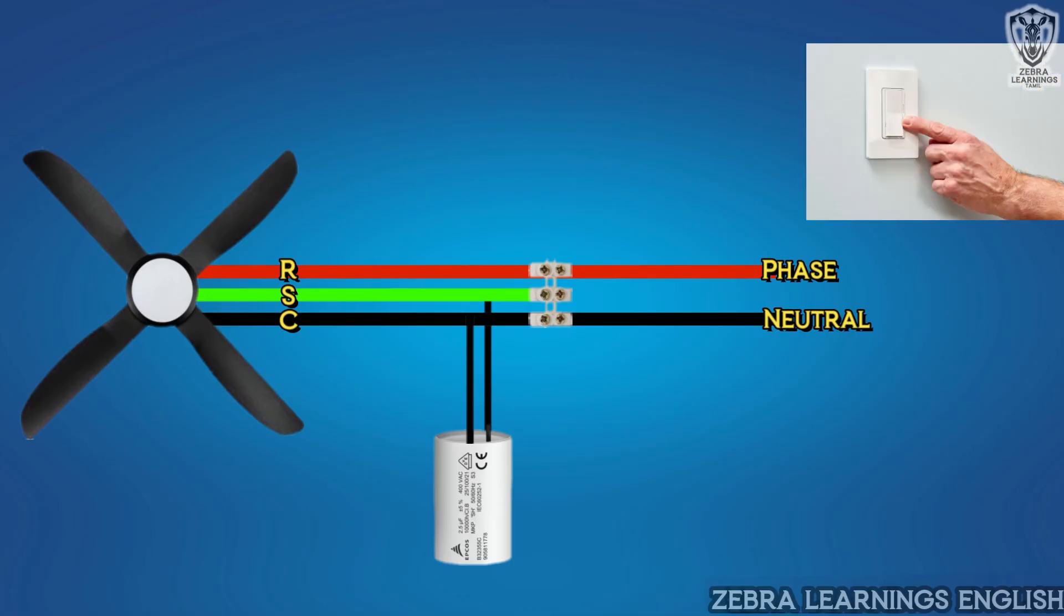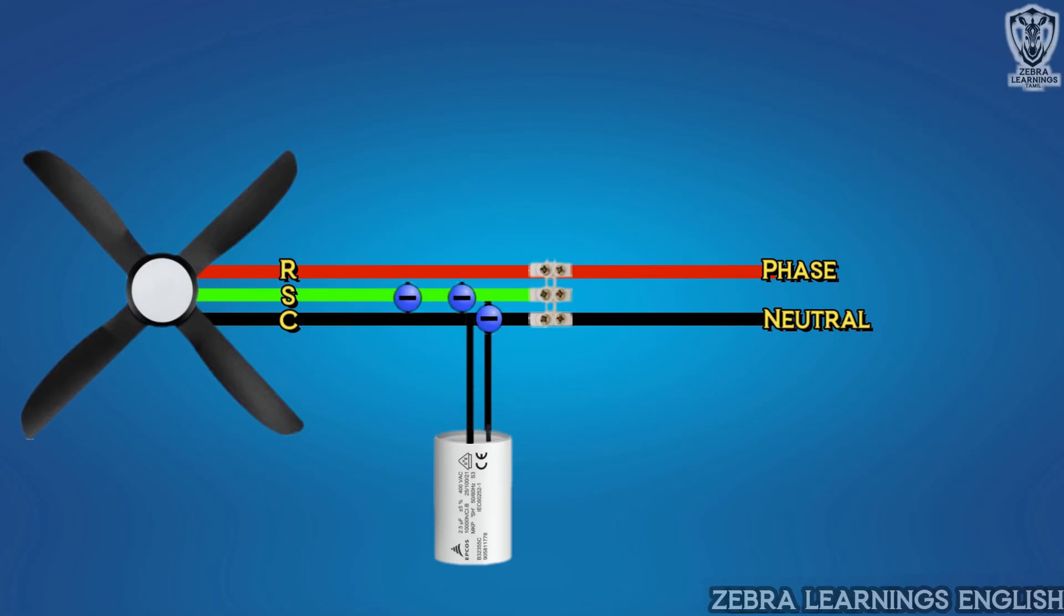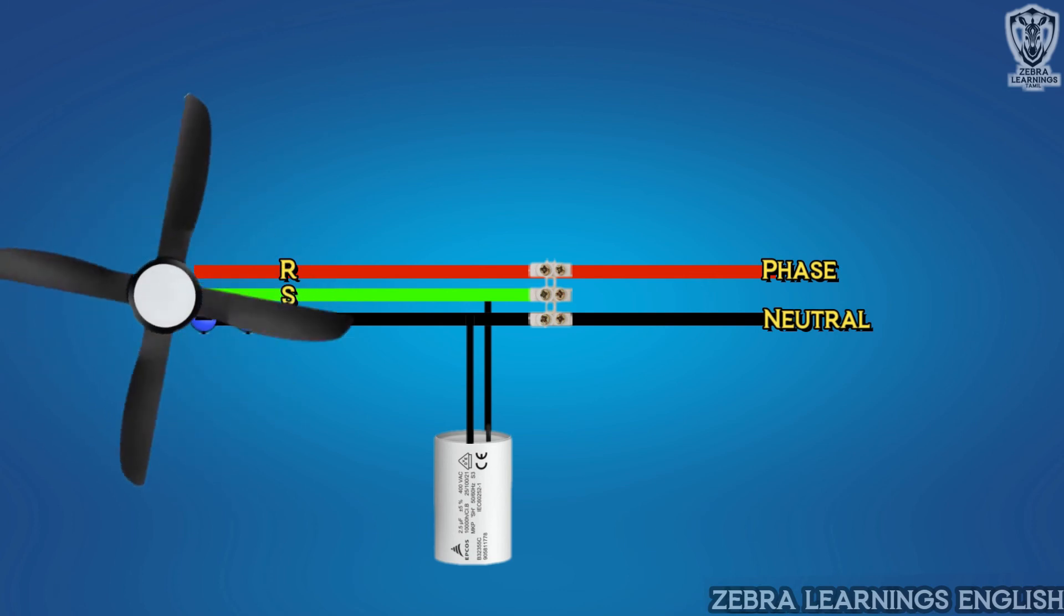Now, when the fan is turned on, the capacitor sends charges to the fan through the starting terminal, and keeps the fan running at high torque, and then cuts off.